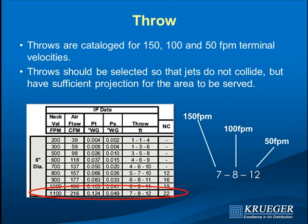Our goal is to select diffuser spacing so that at full airflow, the collision of the two jets from opposing diffusers does not come down far enough to enter the occupied zone. Typically, the 50-feet-per-minute throw plus about three feet, with a nine-foot ceiling, is what you want at the midpoint between diffusers at full flow. At turndown, you want enough throw that air will still serve people at the midpoint between diffusers.